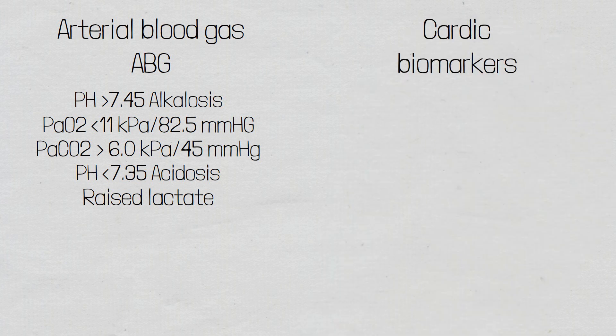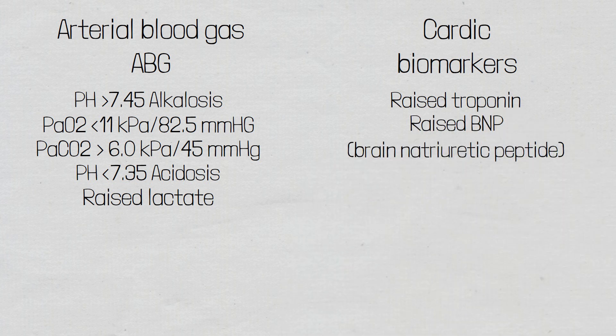Cardiac biomarkers are taken to assess the severity of strain being placed upon the heart and will help guide management. In patients with right-sided heart strain there may be raised troponin, which are proteins released during times of injury. There may also be a raised brain natriuretic peptide (BNP), released by the heart when the ventricles are stretched beyond normal capacity. BNP gets its name because it was first discovered in the brain; natriuretic means to cause natriuresis — the excretion of sodium in the urine — thus reducing total circulating volume and easing pressure on the heart.